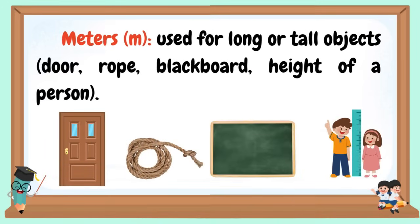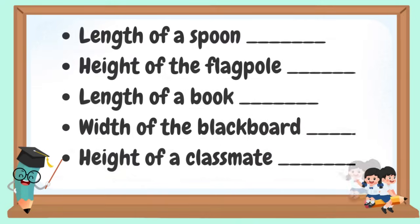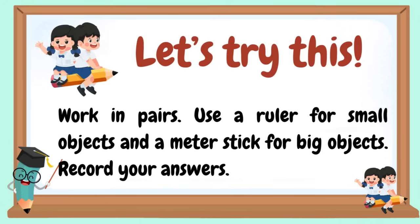Meters are used for long or tall objects like door, rope, blackboard, and the height of a person. Let's try this — write cm if the object should be measured in centimeters and m if in meters. Let's try this. Work in pairs. Use a ruler for small objects and a meter stick for big objects. Record your answers.